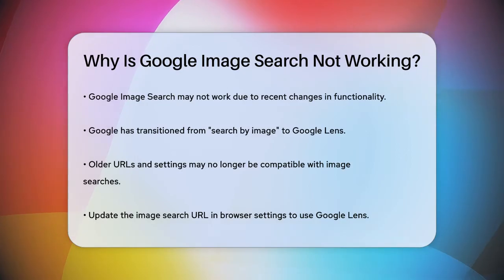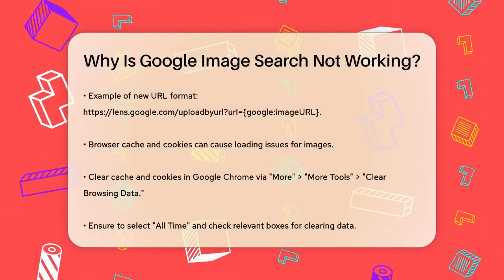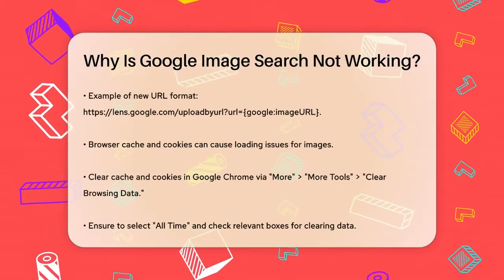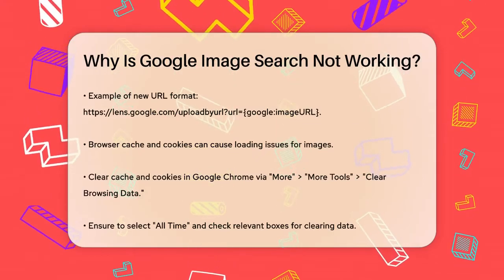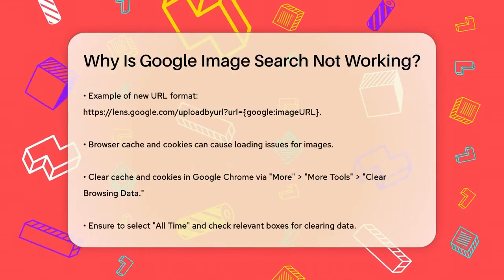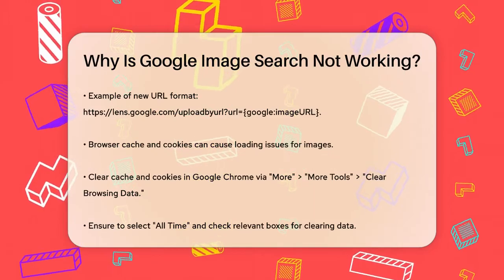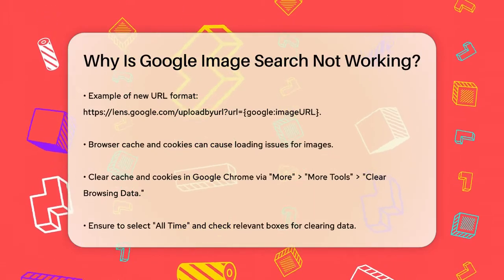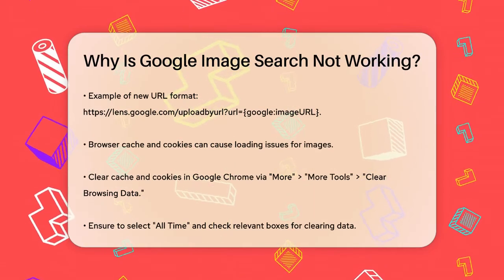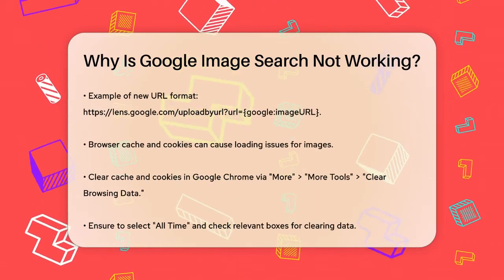To fix this, you can update the image search URL in your browser settings. For example, you can use the Google Lens URL. This will allow you to search for images using Google Lens instead of the old method.